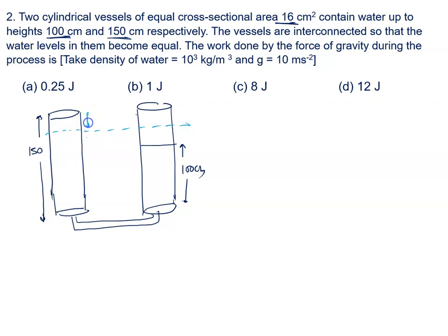50 is 25 cm down, and here 25 cm rise, because extra is 50 cm. So this is the final settlement somewhere here.